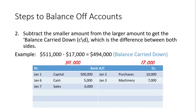The second step is to subtract the smaller amount from the larger amount to get what is called the balance carried down, or balance c/d — which is the difference between both sides. In the previous step, the debit side added up to $511,000 and the credit side added up to $17,000, so we find the difference between both sides. The answer is $494,000 — that is the balance carried down, meaning that is the balance remaining on the account.